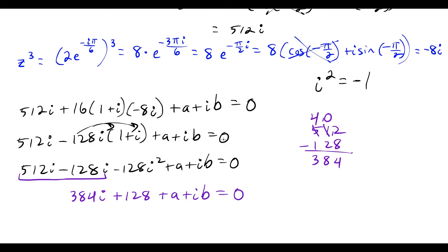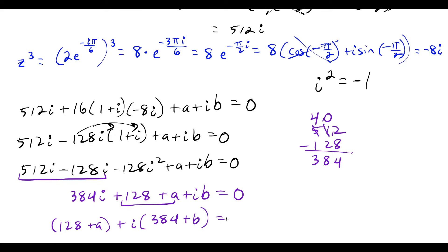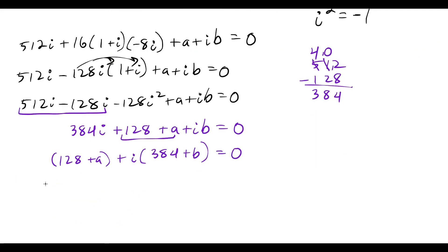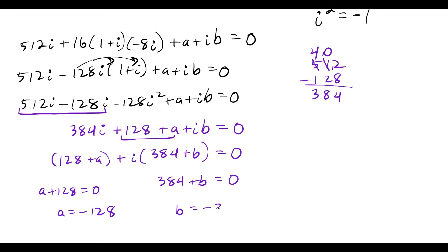We want to solve for a and b. A complex number equals zero only when both the real and imaginary parts equal zero. Grouping: the real part is 128 plus a, and the imaginary part is i times (384 plus b). Both must equal zero. So a plus 128 equals zero, meaning a equals negative 128. And 384 plus b equals zero, meaning b equals negative 384.